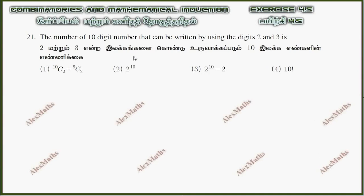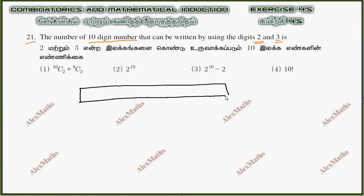Hi students, this is Alex here. Exercise 4.5, question number 21: the number of 10-digit numbers that can be written using the digits 2 and 3. So a 10-digit number requires 10 boxes — 1, 2, 3, 4, 5, 6, 7, 8, 9, 10. Now we use one of the digits 2 and 3, so each box has 2 or 3, giving 2 options.